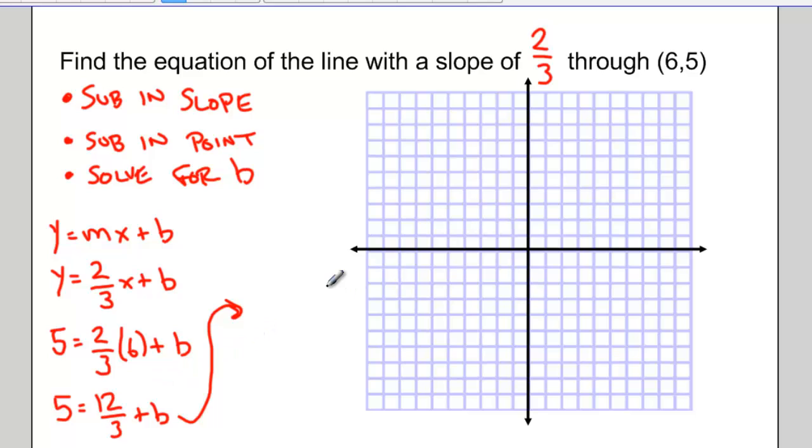I can reduce that fraction. 12 divided by 3 is 4. Bringing that over to the other side, 5 take away 4 is equal to b. Or my y-intercept is 1. So my equation is y equals 2 thirds x plus 1.